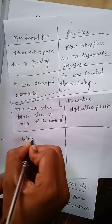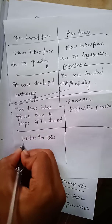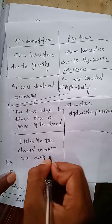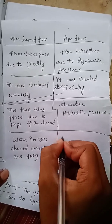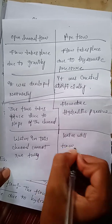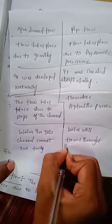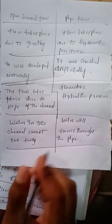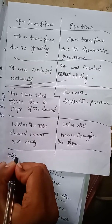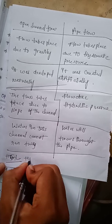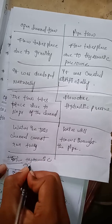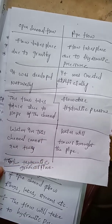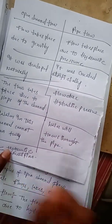The water in an open channel cannot run fully, whereas in pipe flow, water flows throughout the entire pipe. The main difference between open channel flow and pipe flow is the hydraulic gradient line, or HGL. In open channel flow, the HGL coincides with the free surface, whereas in pipe flow it does not coincide with the free surface.